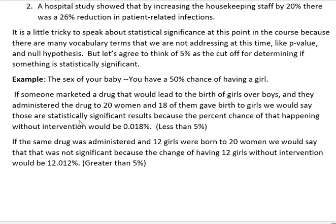In that case, we would say that those are statistically significant results because the percent chance of that happening without the intervention of that medication would be 0.018%, or in other words, less than 5% of the time. If you randomly selected 20 women and looked at the sex of their baby, less than two hundredths of a percent of the time would they have 18 girls. So the fact that they took the medication and got this result means that the medication must be working, because it's highly unlikely that would happen unless they intervened in some way.